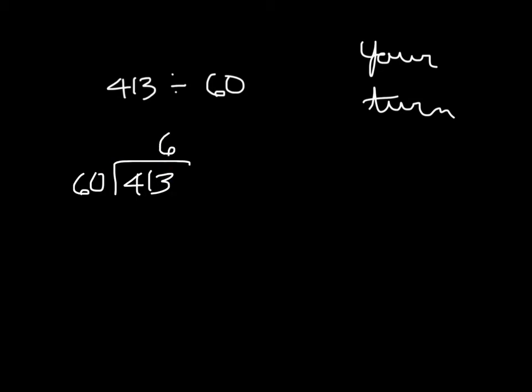That would be 6 whole times, because 6 times 60 is 360. If we had chosen 7, it would be 420, and that would be too much. If I do that subtraction correctly, I get 53, and 53 is our remainder. It can't make another group of 60.